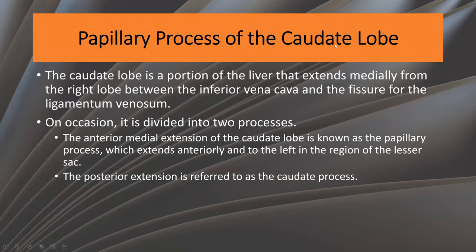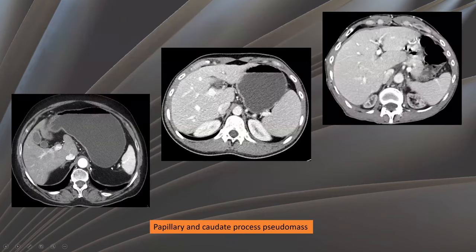The papillary process of the caudate lobe. The caudate lobe of the liver extends medially from the right lobe, between the inferior vena cava and the ligamentum venosum, and occasionally has two processes: the anterior one, which extends anteriorly to the lesser sac, and the posterior caudate process. In this patient, there is an anterior papillary process extending to the lesser sac, and here we have medial extension of the caudate lobe giving the appearance of a pseudo-mass lesion.